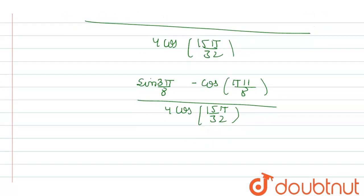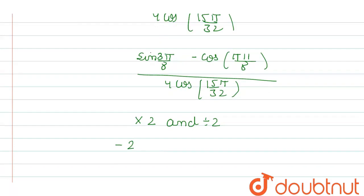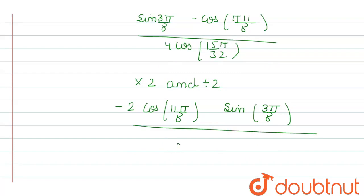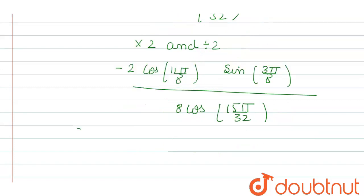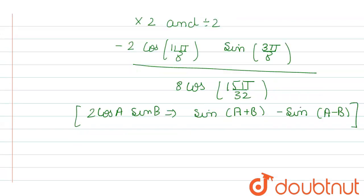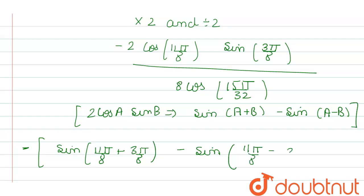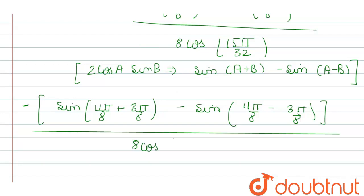We will again try making another trigonometric formula by multiplying and dividing by 2. Taking minus outside, it becomes −2cos(11π/8)·sin(3π/8) divided by 8cos(15π/32). In the numerator we now have the formula 2cosA·sinB = sin(A+B) − sin(A−B). From here we get −[sin(11π/8 + 3π/8) − sin(11π/8 − 3π/8)] divided by 8cos(15π/32).